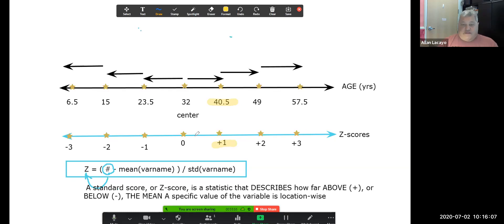How about a 23-and-a-half-year-old? A 23-and-a-half-year-old would be a person who is also one deviation from the mean, but this person is one deviation below the mean, so their z-score would be minus one. So that's how we use z-scores to help us understand and describe data locations.